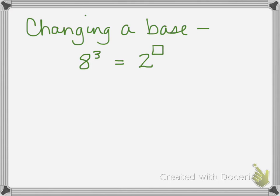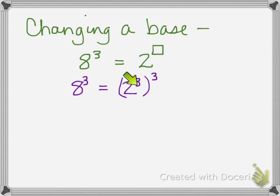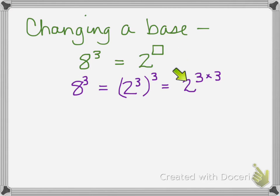A tricky thing for a lot of students is realizing you can change the base in an exponential expression sometimes. If I have 8 raised to the third power, can I write that with a different base — as a power of 2? Well, 8 can be written as 2 to the third power, because 2 times 2 times 2 is 8. So I replace 8 with 2 to the third, using parentheses to show the base is that exponential expression. That gives 2 to the third, to the third power, which by the rules of exponents is 2 to the 3 times 3, which is 2 to the ninth.